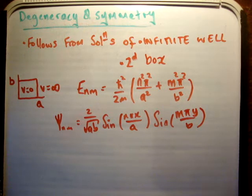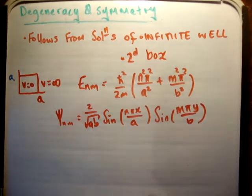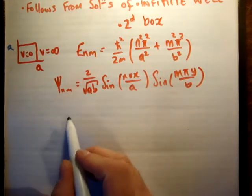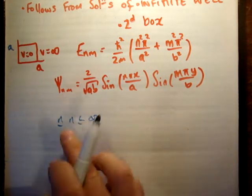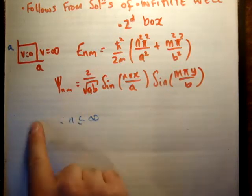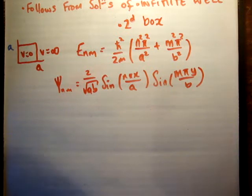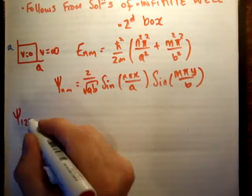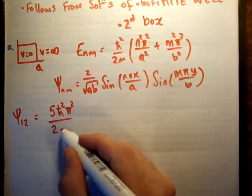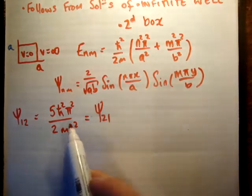What I'd like to do is look at the case where a is equal to b, so we literally have a square box. If we plug in different values for n and m — n and m can be any integer value from one to infinity — I'm going to tell you that the wave function psi 1,2 gives an energy level of 5 times h-bar squared times pi squared over 2m a squared. And also if I try the wave function psi 2,1, I get the same energy level.